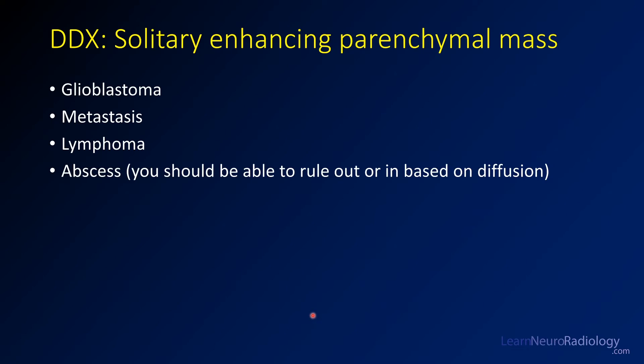Abscess you should be able to differentiate based on diffusion — if you have centrally abnormal diffusion, that's much more common for an abscess. Infection as well is similar. Some other infections like cysticercosis or toxoplasmosis may not have abnormal diffusion, so you can have some unusual infections in your differential.